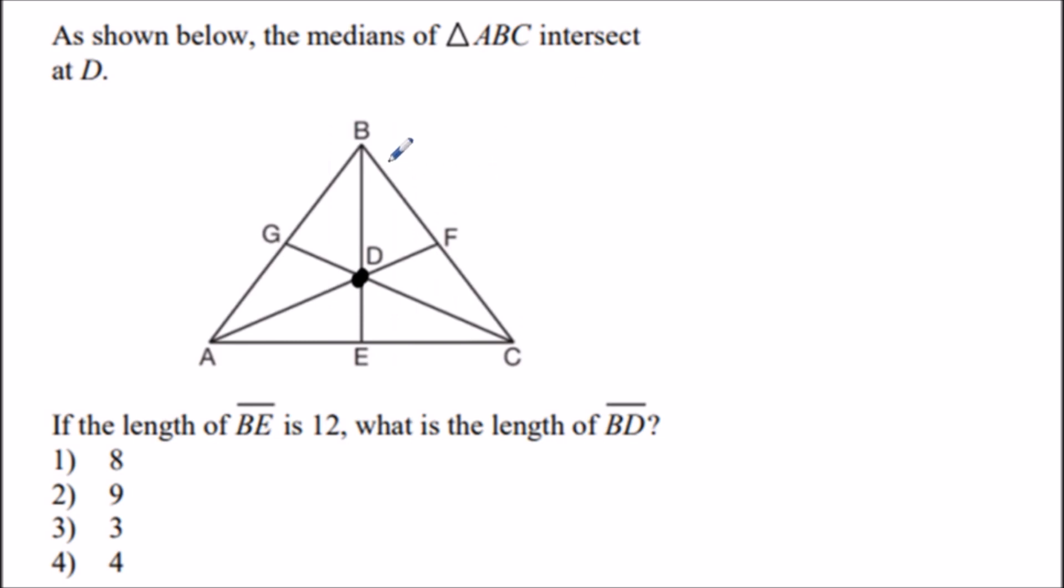A key fact about centroids is that the centroid separates a median into two segments in a 2:1 ratio. The longer segment connects the centroid to the vertex, and the shorter segment connects the centroid to the midpoint of the opposite side. We can label these segments as 2x and x.